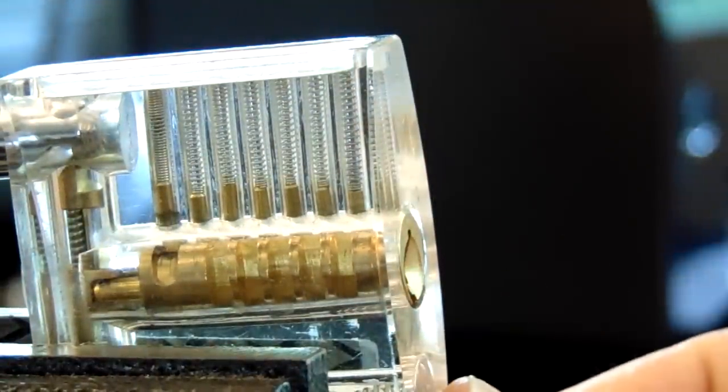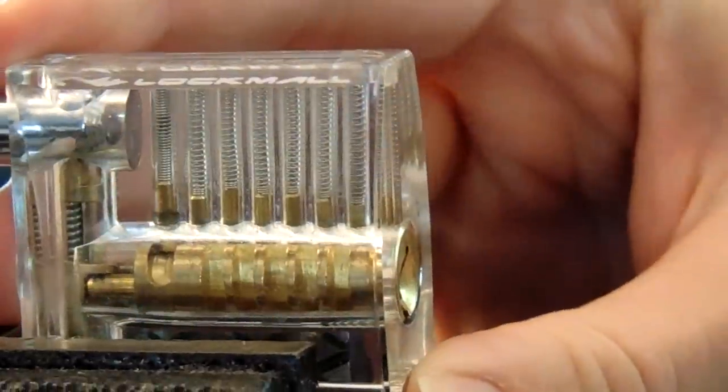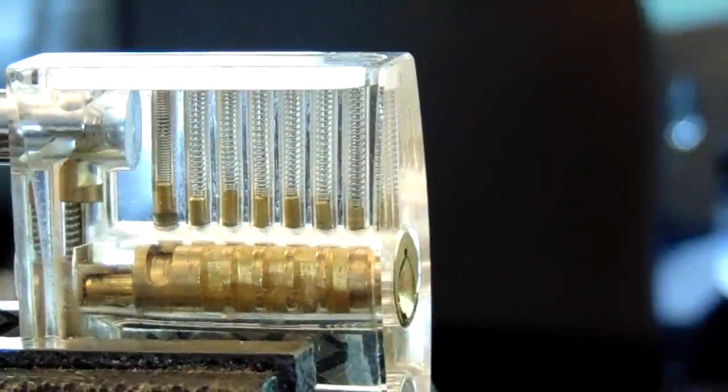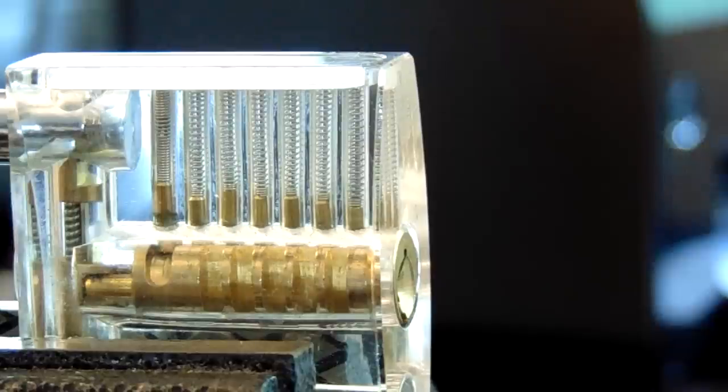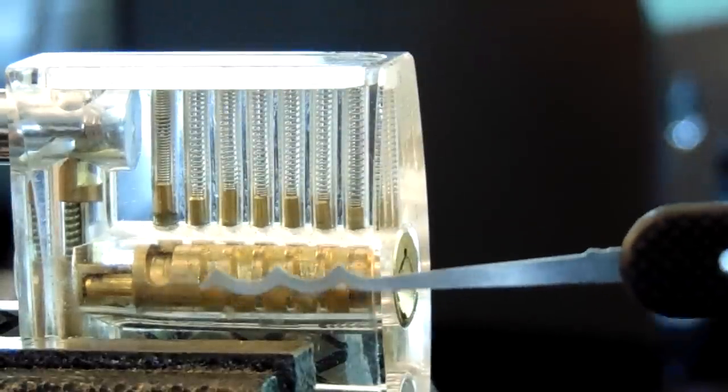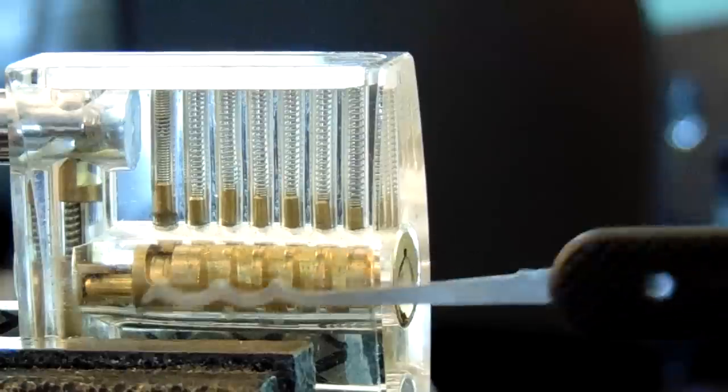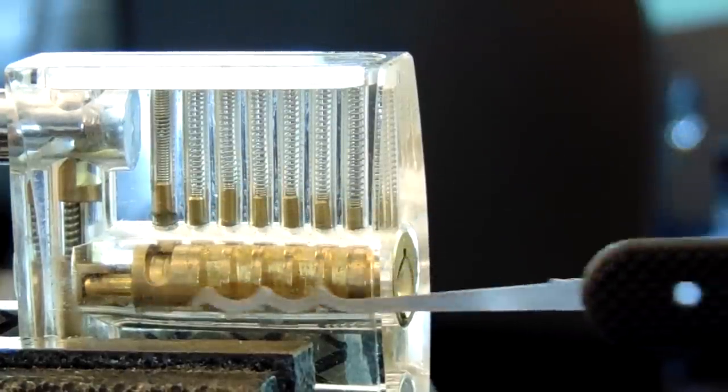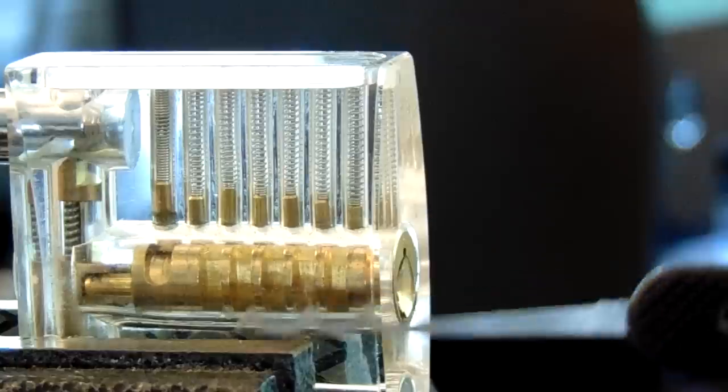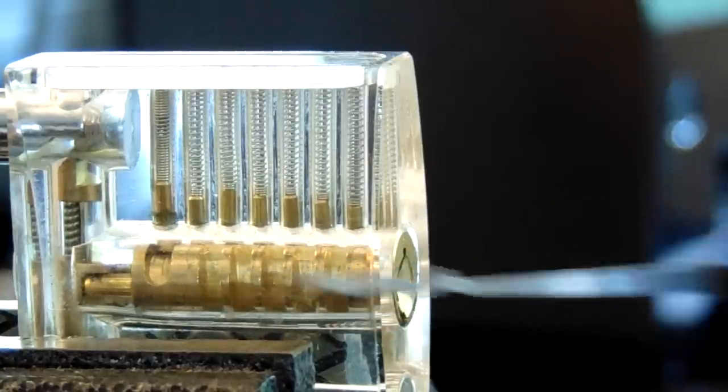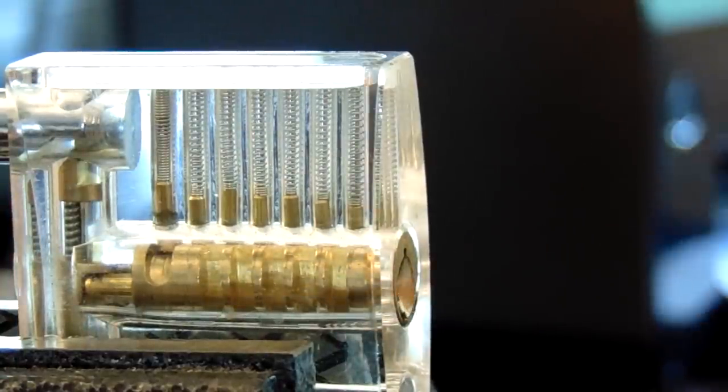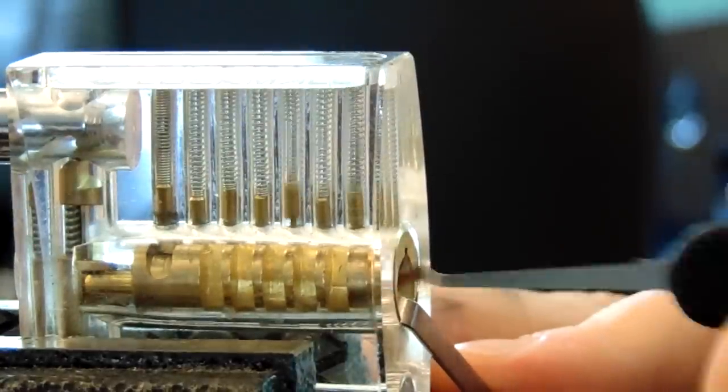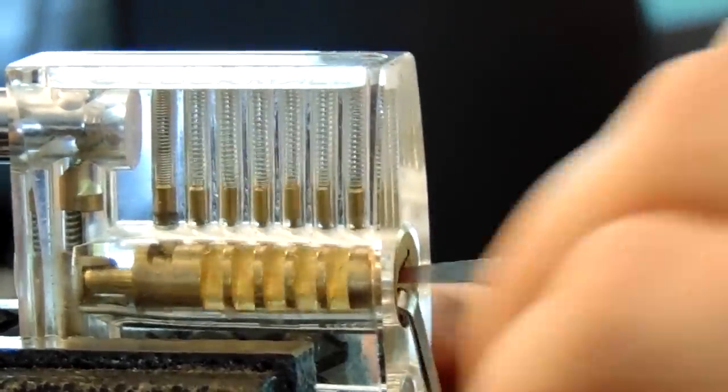Now the next technique I have is raking. In this one you can use your Bogota style rake. And you go back and forth but more of an up and out kind of motion. And this sets all the pins randomly until they're all set to shear, until the lock opens. So I'm going to do light bottom of the keyway tension. Put the rake in. And rake until it's open.